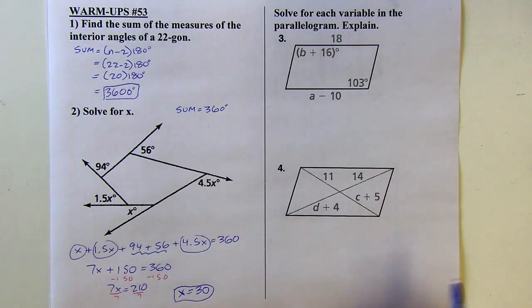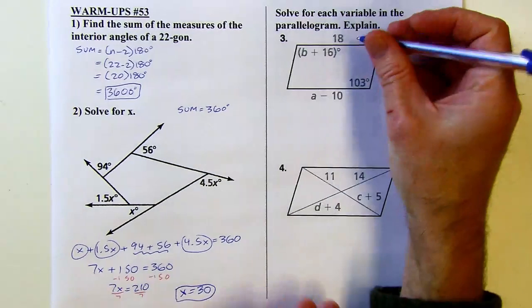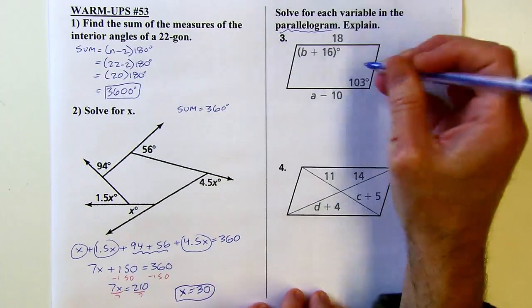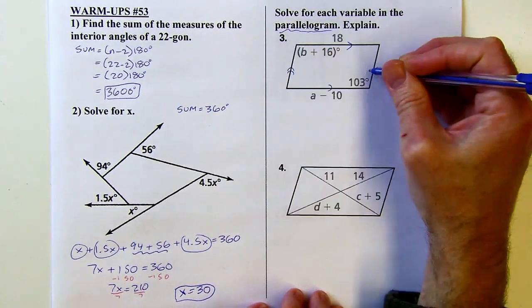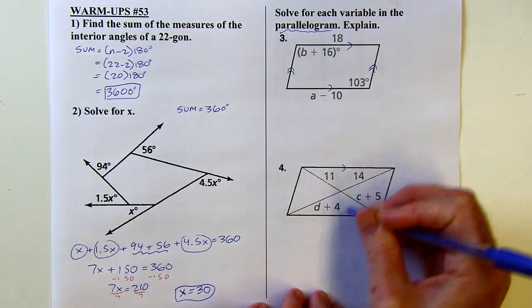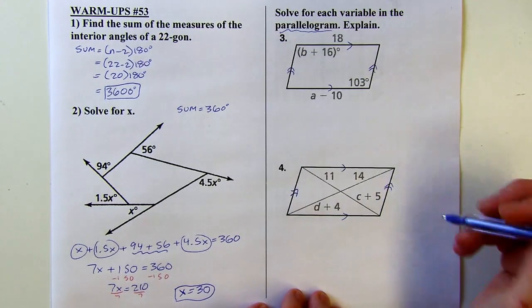Alright. So next up, solve for each variable in the parallelogram. They tell us that these are parallelograms in these directions. That's important. If we didn't know that, we wouldn't be able to do much here. On both of these problems, these are parallelograms. That means I can use the properties of parallelograms.